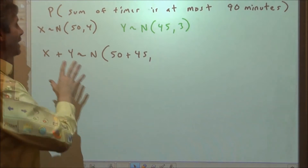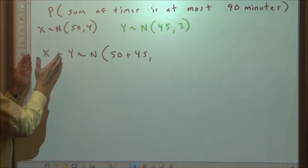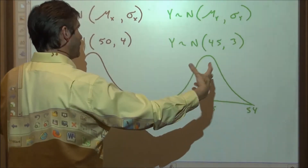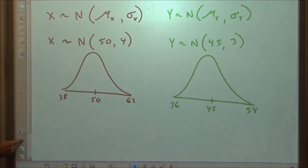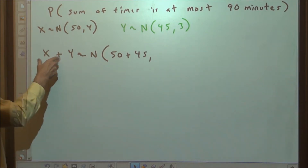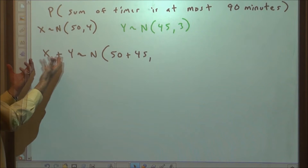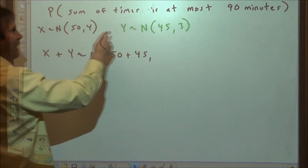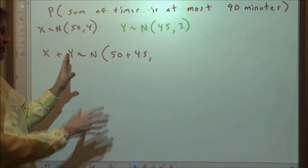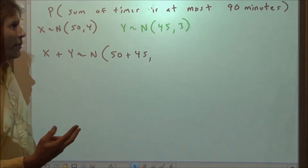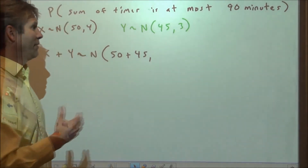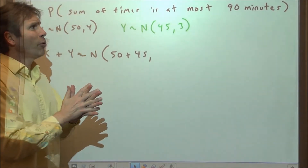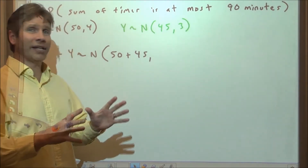To answer that, we need a joint distribution. We can't deal with these two distributions separately — we have to combine them into a new joint distribution, which we'll call the sum of X and Y. This new distribution will be normal with a mean of 50 plus 45. It will always be true that you can combine the means together regardless of whether the two random variables are independent.